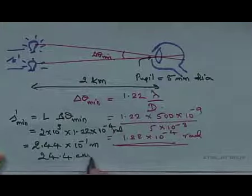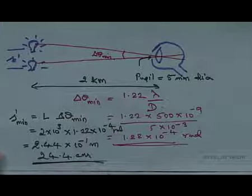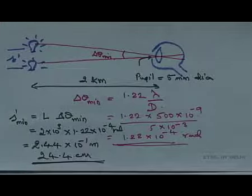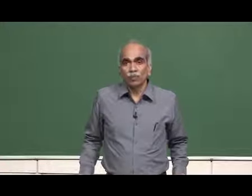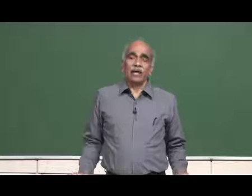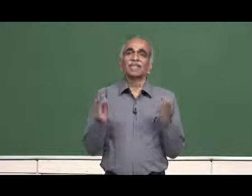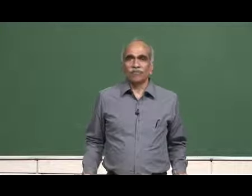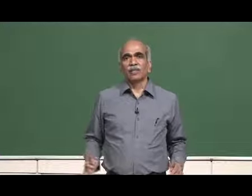The minimum separation is 24.4 cm when using the naked eye versus 2.44 cm with the telescope, because the pupil diameter is 10 times smaller than the telescope diameter. This indicates the importance of diffraction effects in resolving objects at large distances — that is why the term resolving power is used.